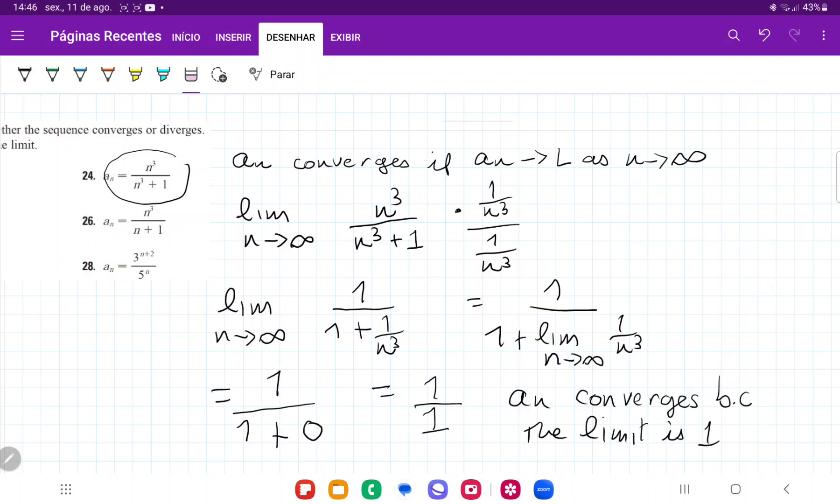And we kind of could tell this intuitively because here we saw that it has a proportion in the cubes of 1 to 1. So that probably meant that the limit was going to go to 1.